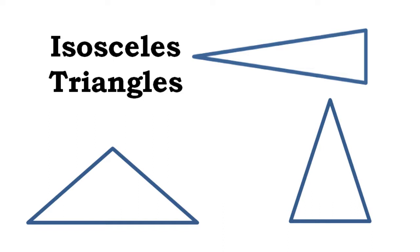A triangle in which two sides are equal to each other in length is known as an isosceles triangle.